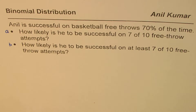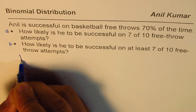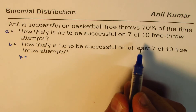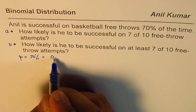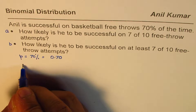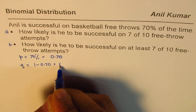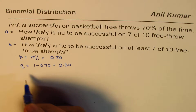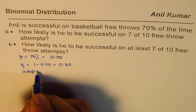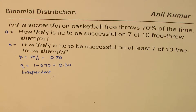The random variable here is the basket. Success probability is 70%, so p = 0.70. Failure probability will be 1 minus 0.70, which is 0.30. All the throws are independent, so we can apply the binomial distribution to find the probability.